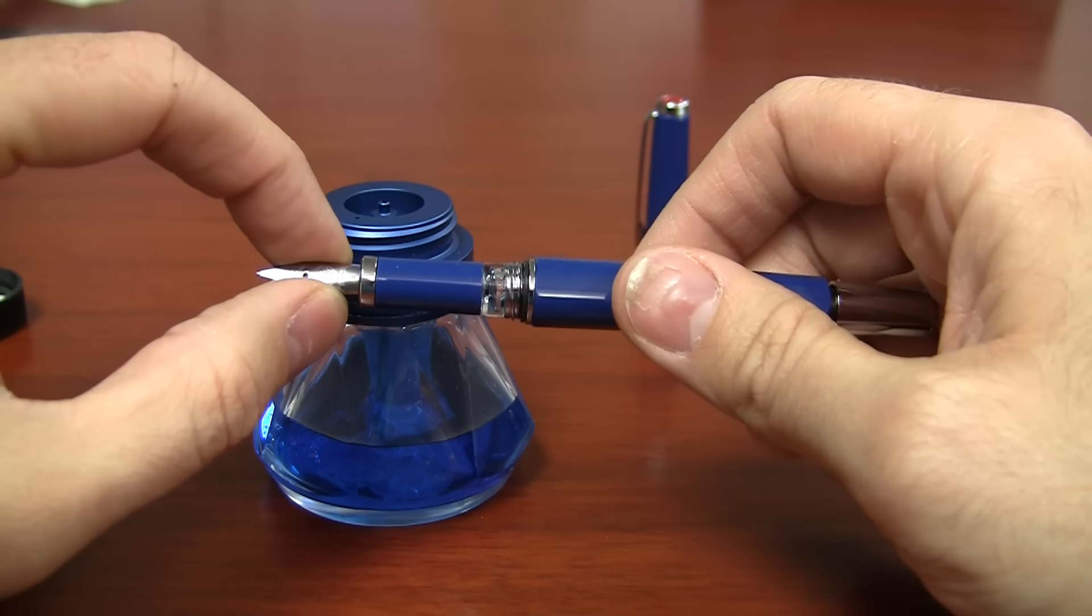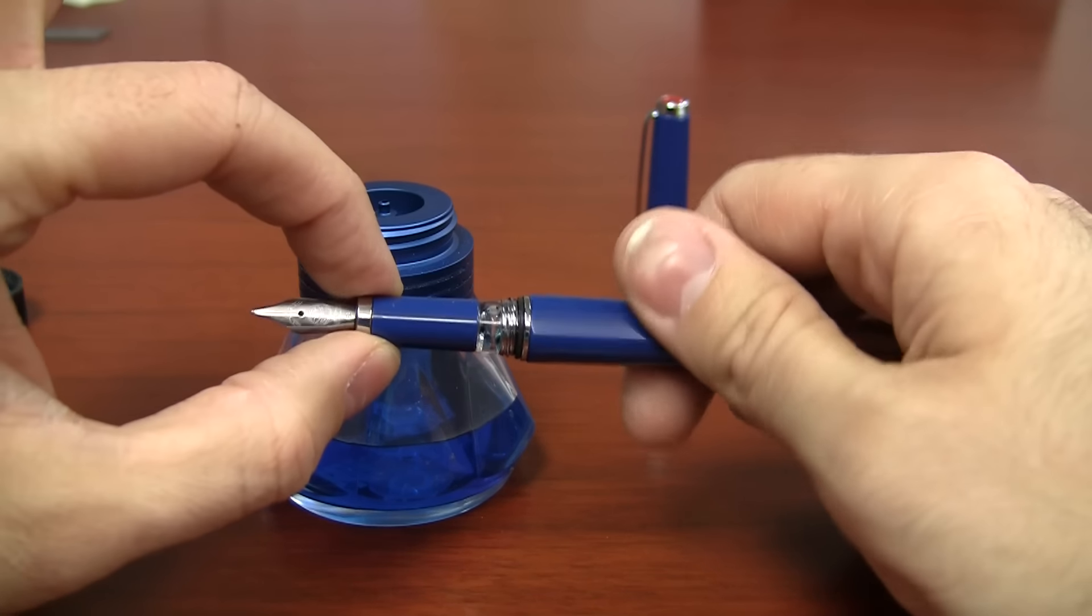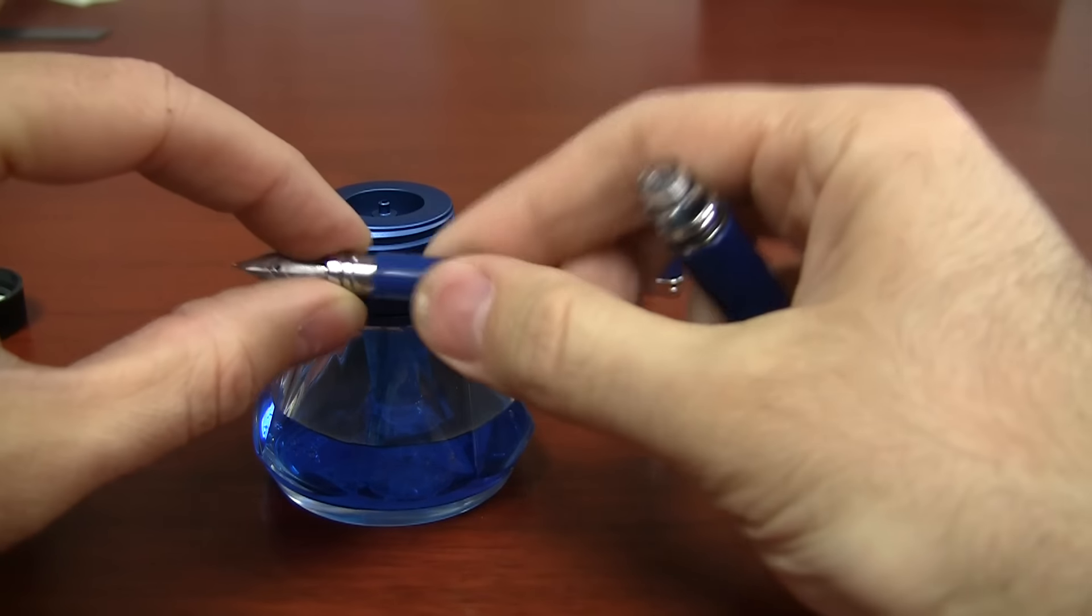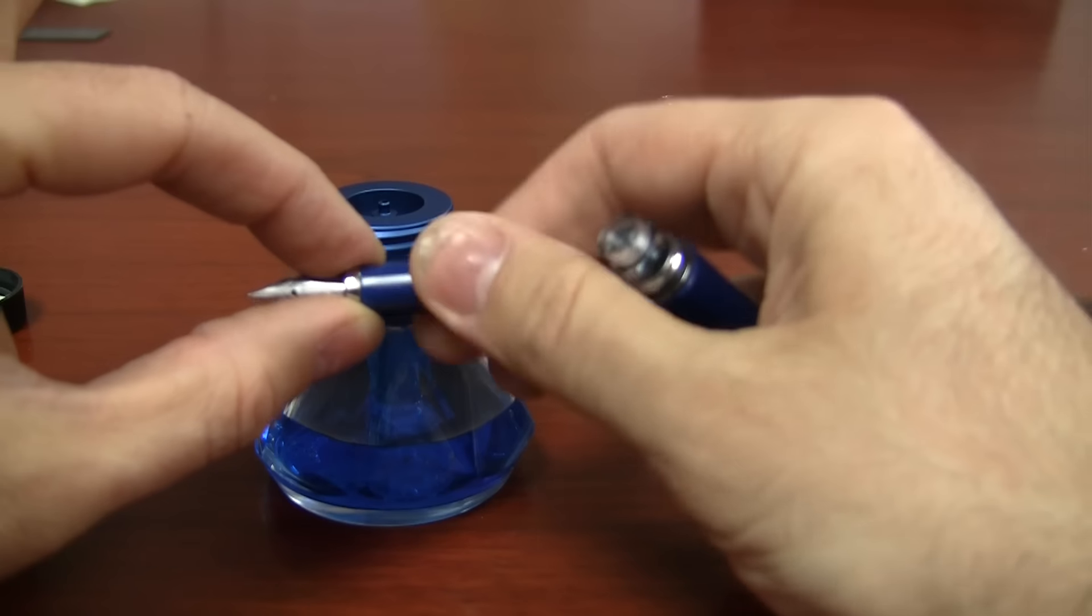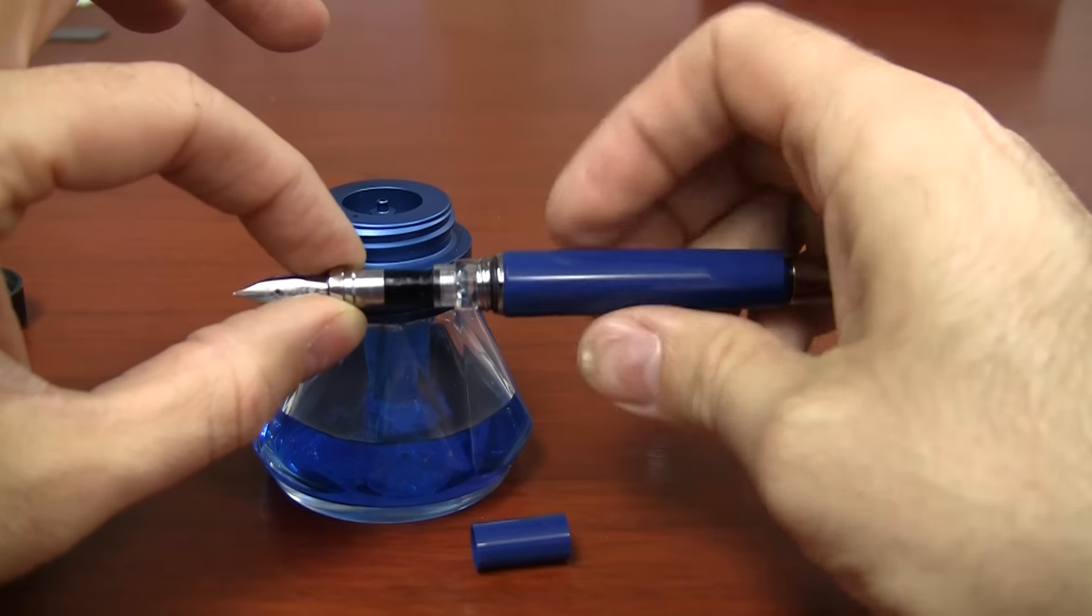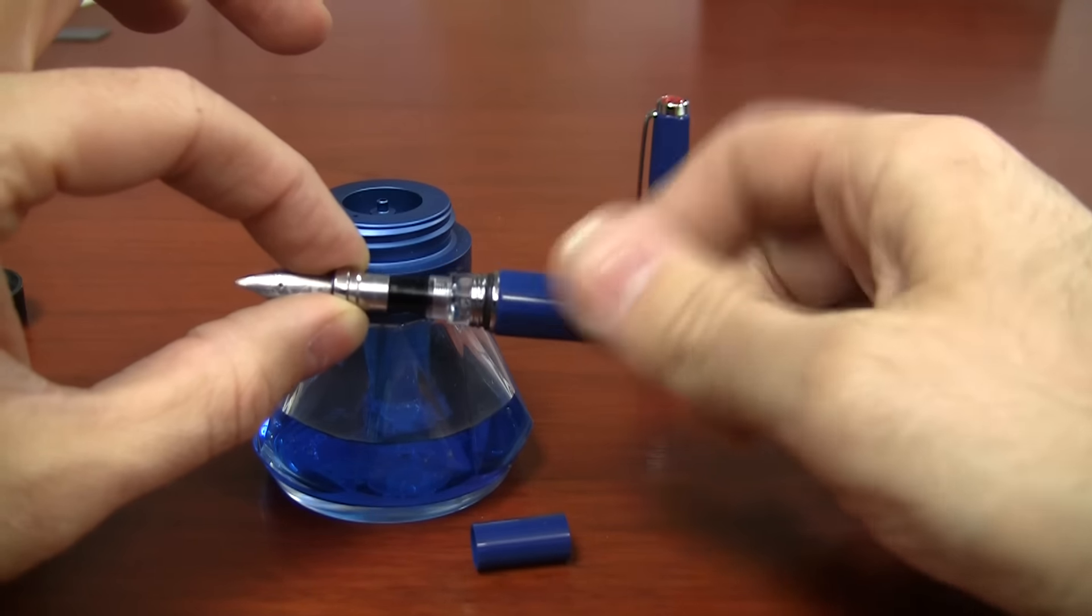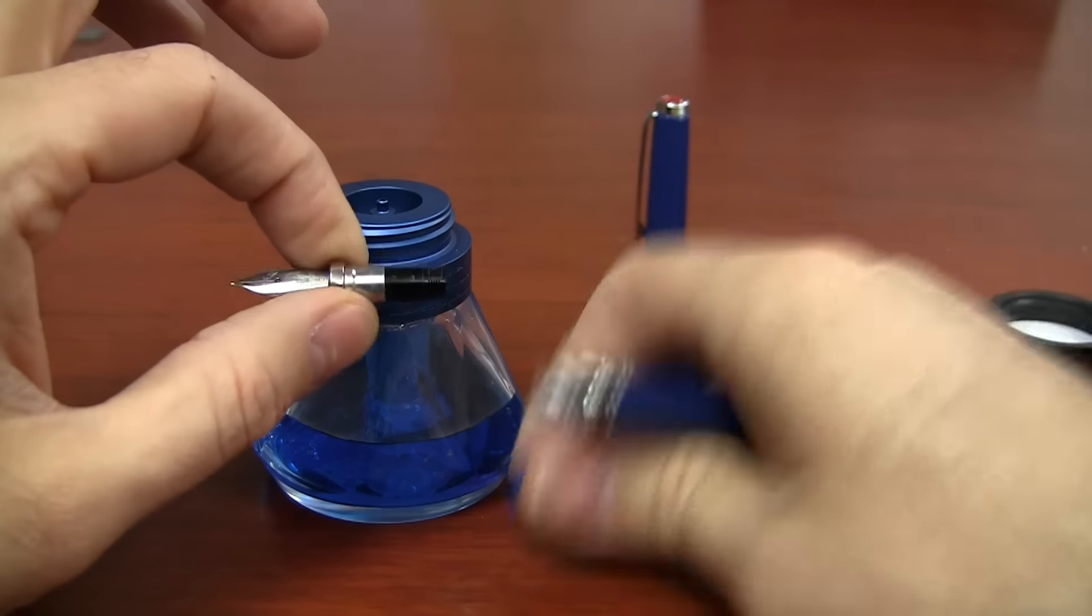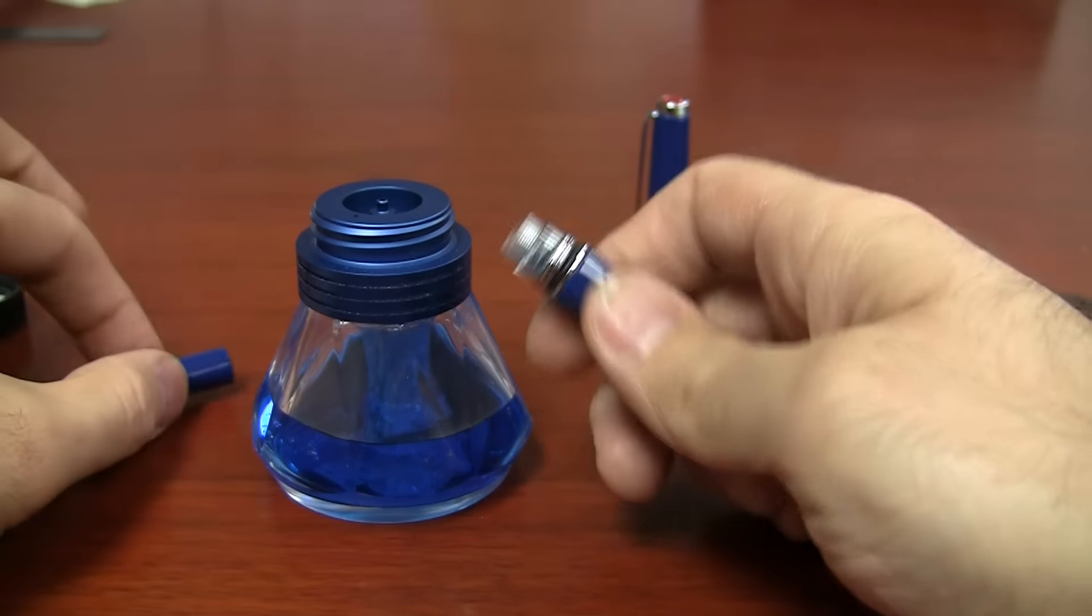You've got to grab up near this metal part here. You don't want to go grabbing the nib. You just want to grab right here around this metal collar and that's what's actually going to get you somewhere. Because this part here is just free spinning. This is just going to turn and twist and it's not going to do much for you. It's actually this part here that's fitting into the pen.